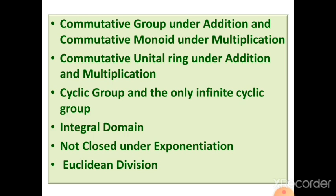Integers form a cyclic group — a group generated by a single element, namely 1. Since the integer group has infinitely many elements, it is an infinite cyclic group. In fact, integers can be considered the only infinite cyclic group, as any other infinite cyclic group is isomorphic to Z.